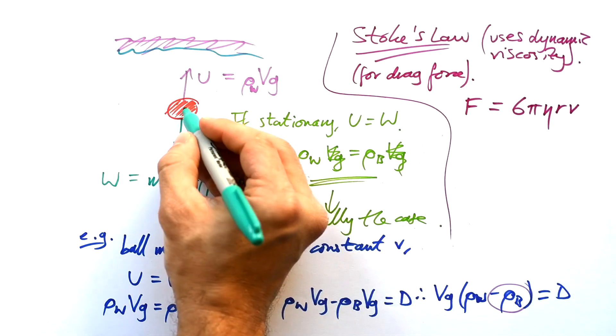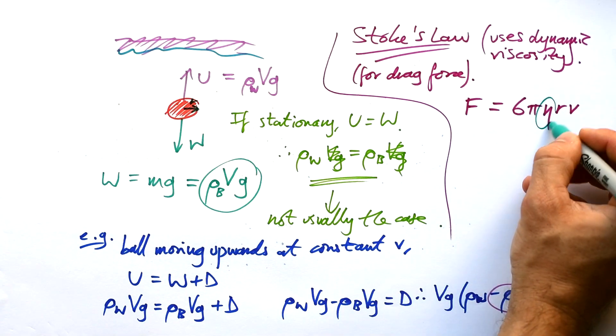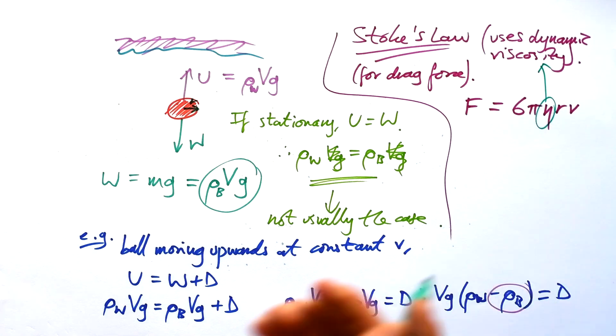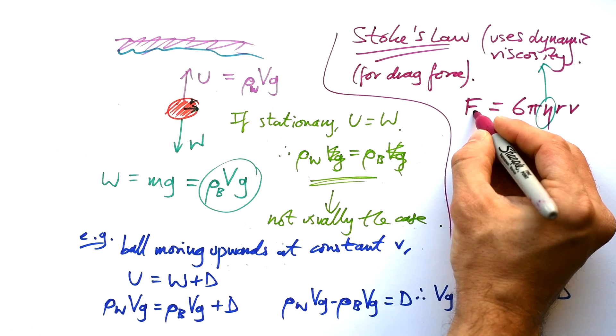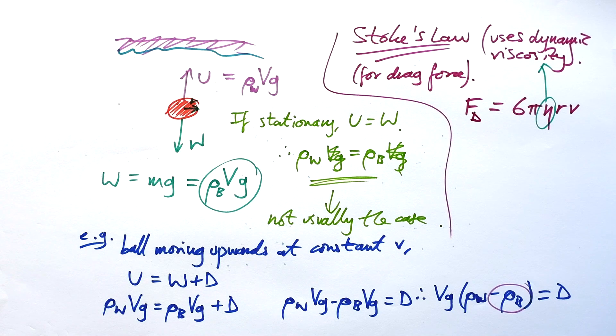R being the radius of the ball. V being the speed. η here, that is the dynamic viscosity. And that depends on what the surface of the ball is and the liquid that it is in as well. Quite often you'll see it with a subscript d to make it clear that it is a drag force.